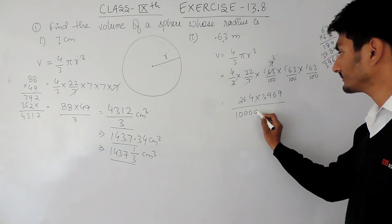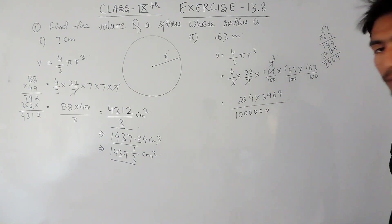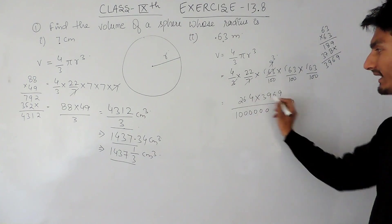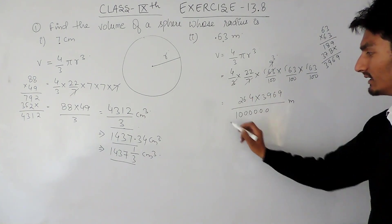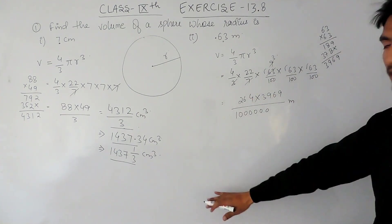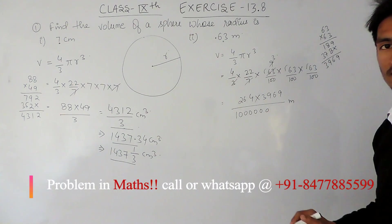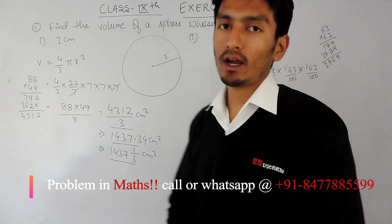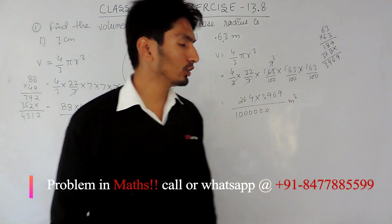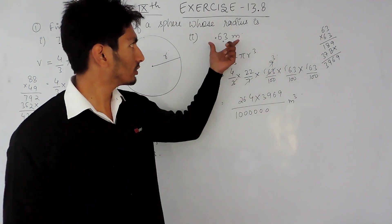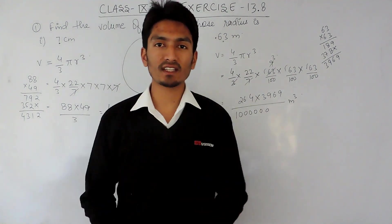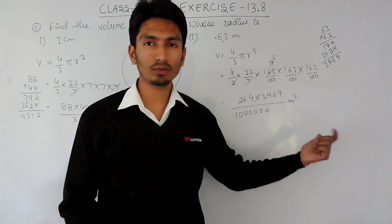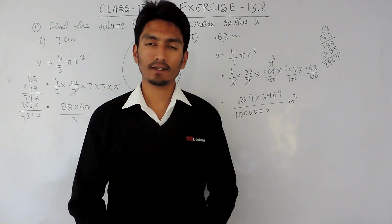There will be six zeros in the denominator. When you multiply these numbers, you place six zeros counting from the right and then place the decimal point there. This will give you the volume for the sphere when the radius is 0.63 meters. I hope you can solve this. Thank you.